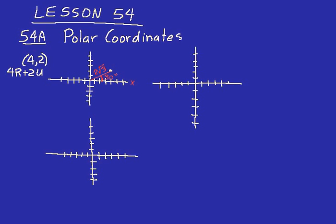That point can also be described using a magnitude and a direction. The direction is the angle. Something called a vector has a magnitude and a direction. To write a vector, we use polar coordinates: we have a magnitude — I'll call that M — and an angle, I'll use the symbol theta, which is a Greek letter commonly used to represent an angle. So: M angle theta, magnitude and direction.